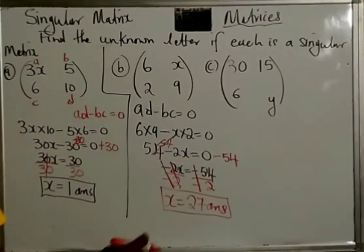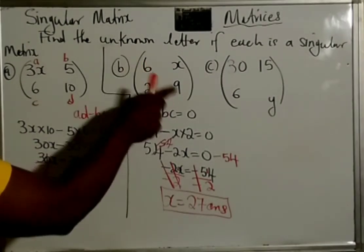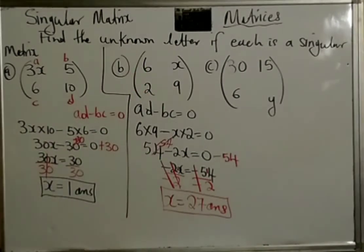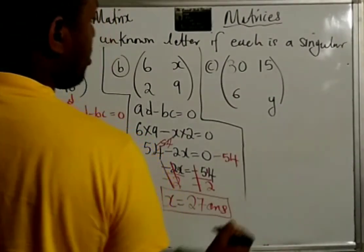So, what this means, when you plug in 27 in the equation, and you multiply 6 times 9 you get 54, and you say 2 times that equal to 54. So, 54 minus 54 is equal to 0, and that's the definition of a singular matrix.